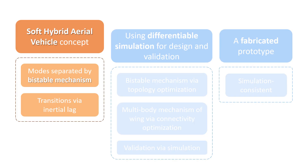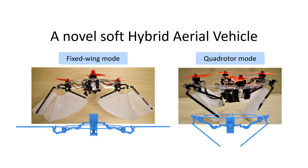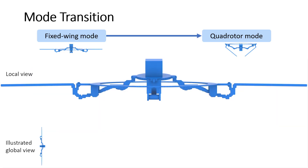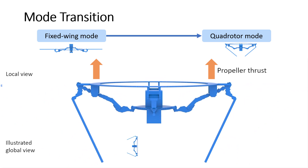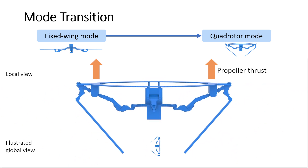We introduce our HAV concept in detail. The two modes are shown here. To transition from fixed-wing mode to quadrotor mode, we accelerate the ring suddenly. The fictitious inertial force will drag the central mass to the second equilibrium.